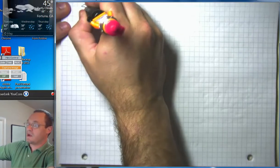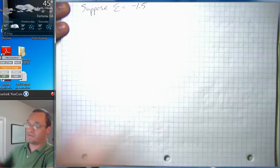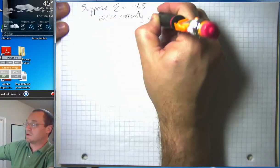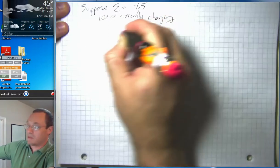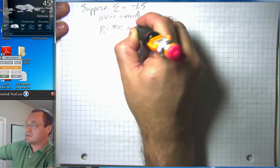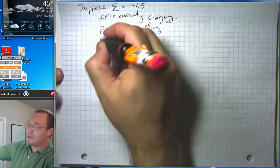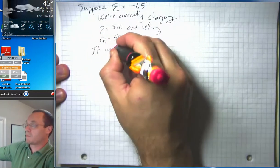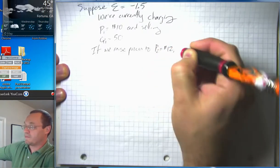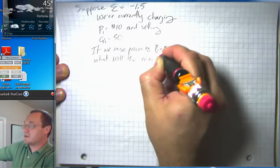Let's think about an example where suppose we know that elasticity is something like negative 1.5, and we're currently charging P1 equals $10 and selling Q1 equals 50 units. If we raise prices to P2 equals $12, what will the new quantity demanded be?